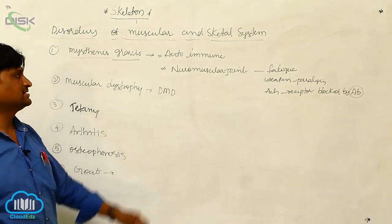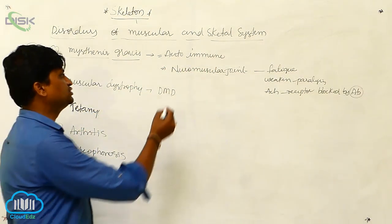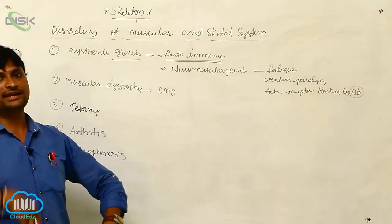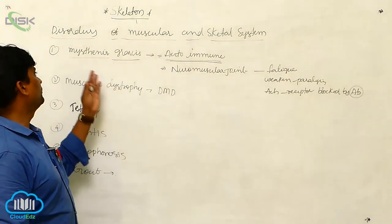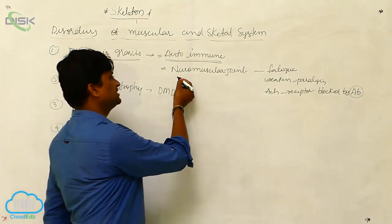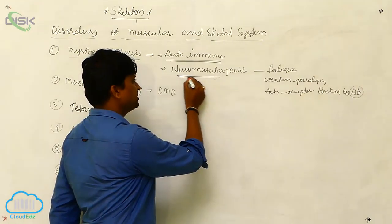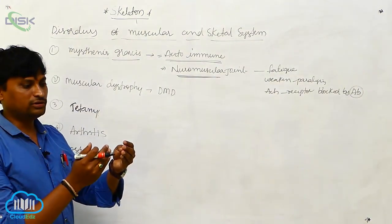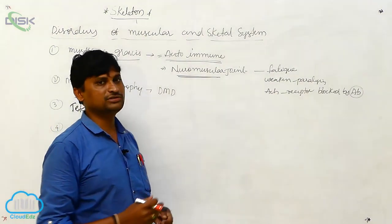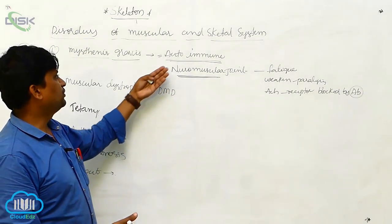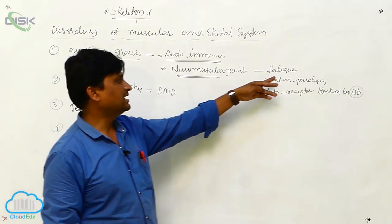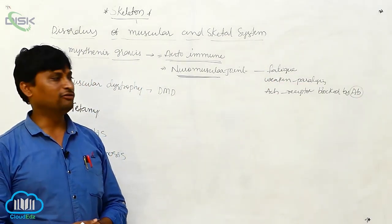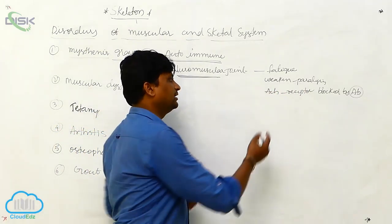Myasthenia gravis is basically an autoimmune disorder. This means the immune system attacks the human body, leading to abnormalities. It is associated with the neuromuscular junction — where the motor neuron is attached to the muscle area. This abnormality leads to fatigue and the possibility of paralysis.